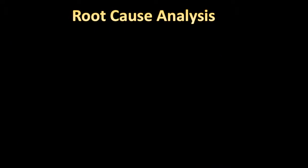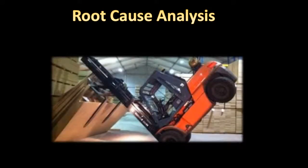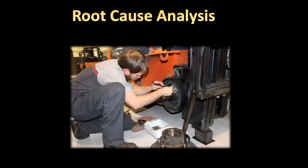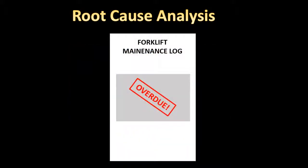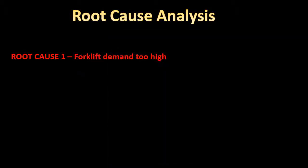A newly trained forklift driver spins out of control, destroying property and injuring a fellow worker. Upon investigation, it was found that the forklift truck wasn't properly serviced and needed a new set of brake pads. It was then discovered that the truck missed the past two scheduled services due to excessive demand for the truck. It was thus concluded that excessive forklift demand, along with an ineffective equipment maintenance policy, were the two root causes of the incident. An extra forklift truck was purchased, and a more robust maintenance policy was introduced as a response to the investigation.